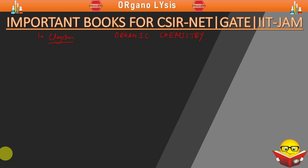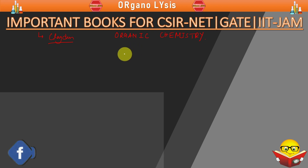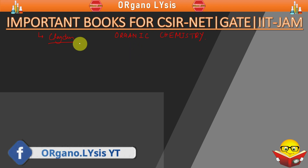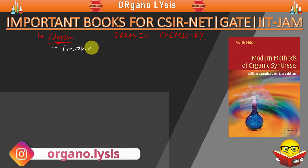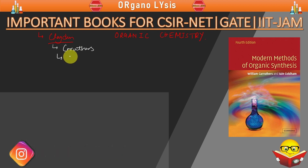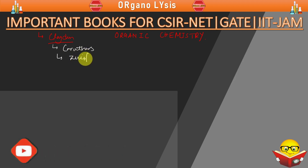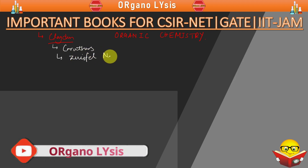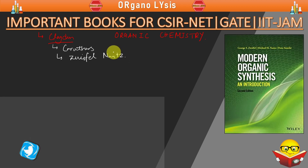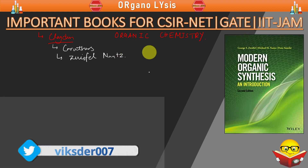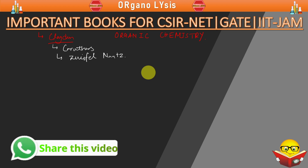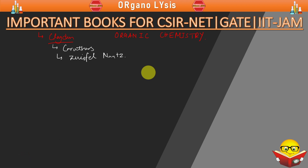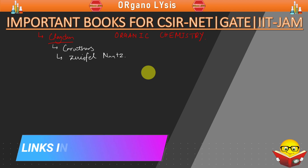If you are an aspirant for CSIR, NGATE, or GATE, then you should refer, other than Clayden, first Carruthers and second Zweifel & Nance. This book — Zweifel & Nance — is very important; the name of this book is 'Modern Organic Synthesis.' These three books are your general books and you can go through them to understand overall concepts, which is very important.